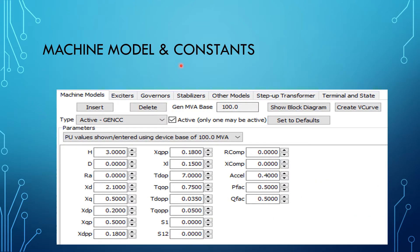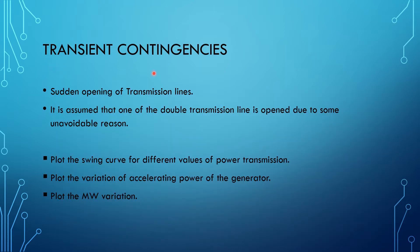For the machine model and parameters for transient analysis, we need to choose a machine model. In this problem I am taking the GenCC model. We can see the different parameters: H inertia constant, D damping factor, armature resistance, Xd prime as synchronous reactance direct axis, and the quadrature axis reactance. We are selecting these parameters to do our analysis. For transient contingencies, we are taking only one contingency to do our transient stability analysis.